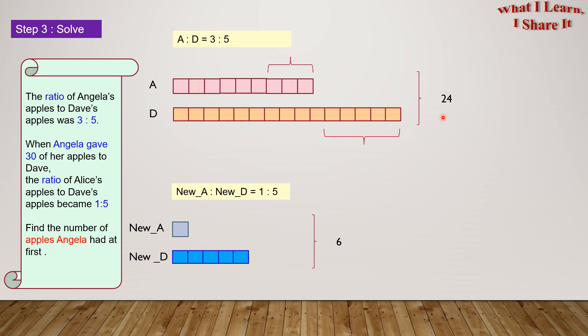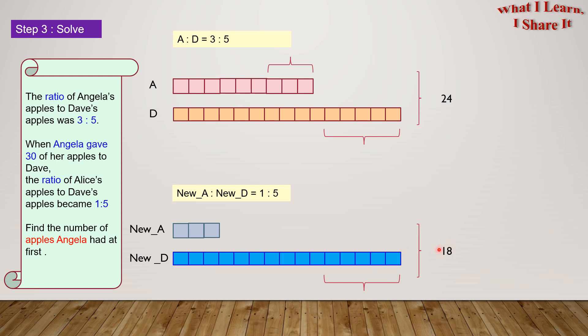Now we have to increase the units in the second ratio 3 times. For the first time, we will put 1 unit for new A, and we will have to put a set of 5 units for new D. For the second time, if we put 1 more unit for new A, we will have to put another set of 5 units for new D. The total units in this ratio is 18.